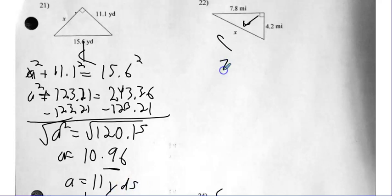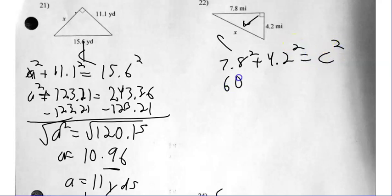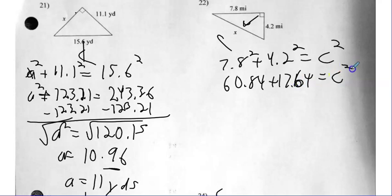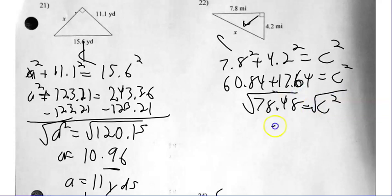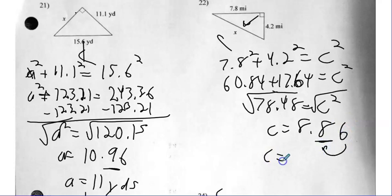Number twenty-two — I do have A squared and I have B squared. What I don't have is C squared. So this just takes 60.84 plus 17.64, which equals C squared. That's a total of 78.48 — square root. C is equal to 8.86. Rounding here tells me to round up. So C is 8.9 miles.